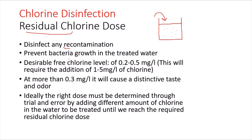This residual chlorine will disinfect any recontamination, protect the water from contaminants, and prevent bacterial growth in the treated water. The desirable free chlorine level is 0.2 to 0.5 milligrams per liter. For drinking water, this requires the initial addition of 1 to 5 milligrams per liter of chlorine.